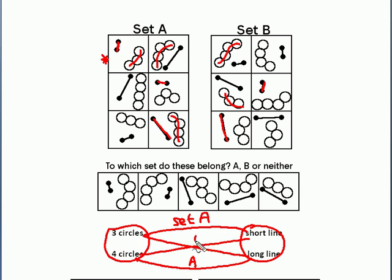And then these rules can be unique compared to a set B, where we can have the other combination, and that's what we see, three circles, long line, or four circles and short line.